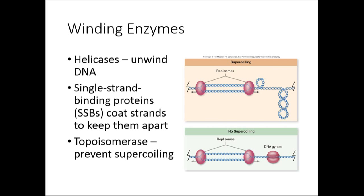Because DNA is wound up, several enzymes help keep things from getting tangled. Helicase unwinds and opens the DNA. Single-stranded binding proteins keep it open so enzymes can work. Topoisomerase prevents supercoiling — when you unwind one region, it causes strain elsewhere, and topoisomerase undoes that supercoiling.